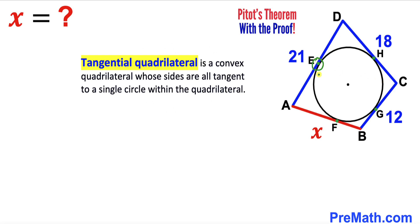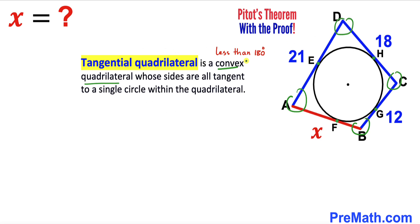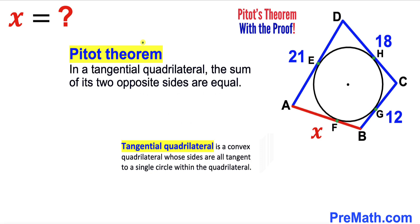Points E, F, G, and H are the points of tangency. This is a convex quadrilateral — in other words, all angles of this quadrilateral are less than 180 degrees.